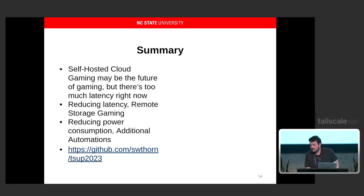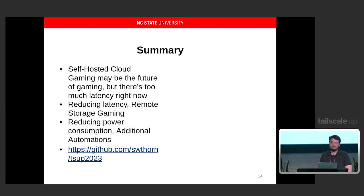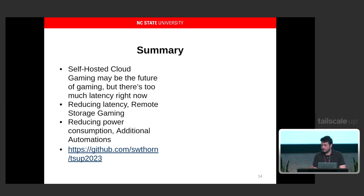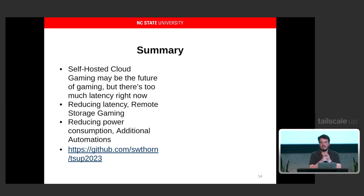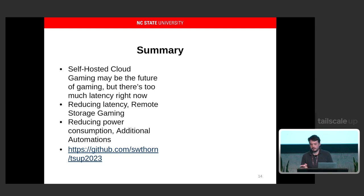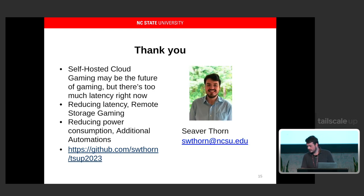In summary, self-hosted remote cloud gaming is the future for lower latency. I talked about reducing latency through NAT traversal, remote storage gaming as a way to stream the hard drive instead of audio and video, and reducing power consumption with automations. There are additional code snippets I wanted to show, including TailScale access control policies for Moonlight and Sunshine ports, and Home Assistant samples, which I have posted online — check in about five minutes and I'll make the repository public. Thank you for coming to my talk.